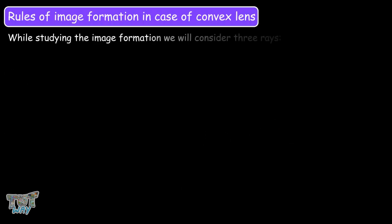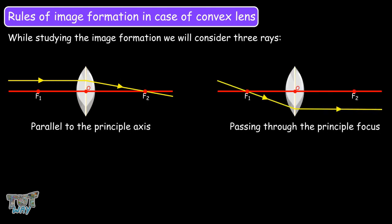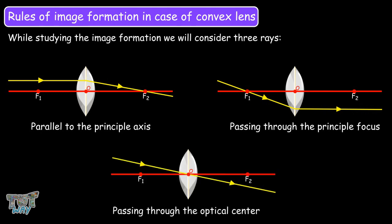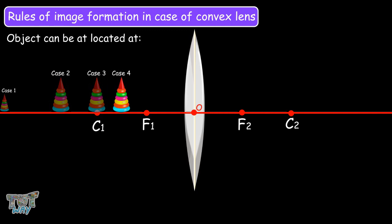When studying image formation, we will consider three rays: first, a ray parallel to the principal axis; second, a ray passing through the principal focus; and third, a ray passing through the optical center. We will now learn image formation with this lens by considering six different cases where the object is located at infinity, beyond the center of curvature, at the center of curvature, between the focus and center of curvature, at the focus, and finally between the focus and the optical center.